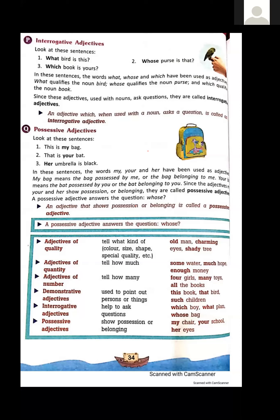Adjectives of number tell us how many, and they are used with countable nouns, like 'four girls', 'many toys', 'all the books'. Demonstrative adjectives are used to point out a person or thing: this, that, these (plural of this), those (plural of that), and such. Interrogative adjectives help to ask questions — which boy, what plan, whose bag. Possessive adjectives show possession or belonging — my chair, your school, her eyes.